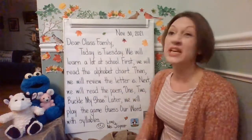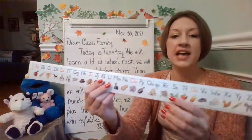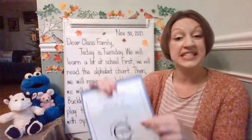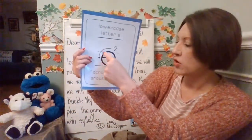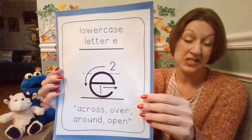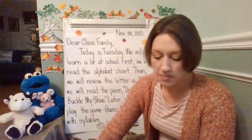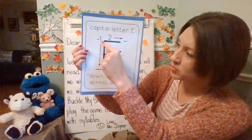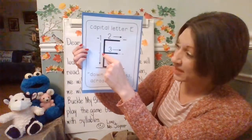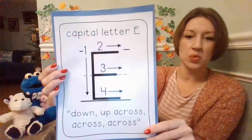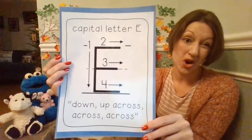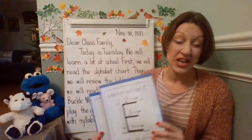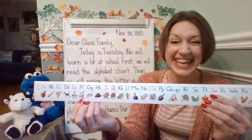Then we will review the letter E — both uppercase and lowercase E. When you make a lowercase E, you go across, over, around, and then leave a little space open. For an uppercase E, first pull straight down, then pick up your pencil or marker and pull across at the top, middle, and bottom. So this one is down, then across, across, across. We're going to be practicing both the lowercase and uppercase letter E.